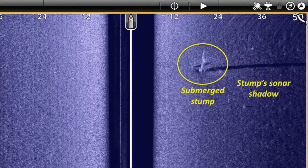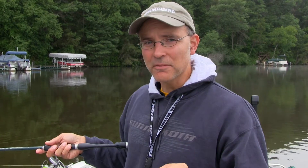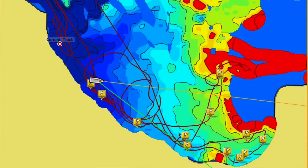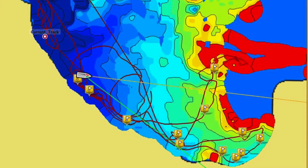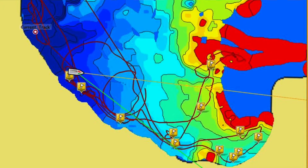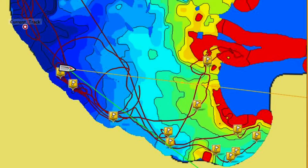As I go through my morning's fishing, the custom contour map that I created for this area using AutoChart Live will become annotated with an array of waypoints, each of which represents a stump.